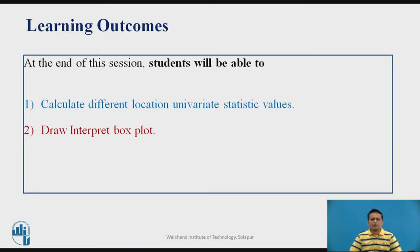These are the learning outcomes. At the end, you will be able to calculate different location univariate parameter values, as well as visualize these parameters using a box plot. You will be able to draw and interpret that box plot.